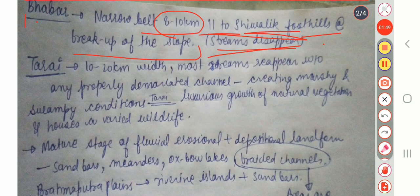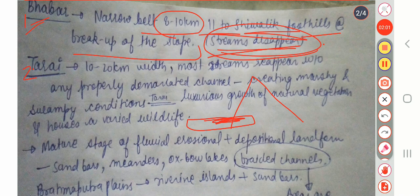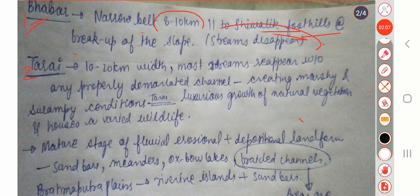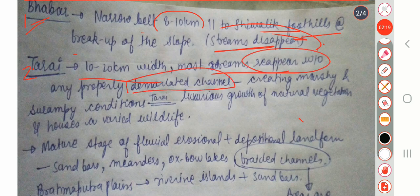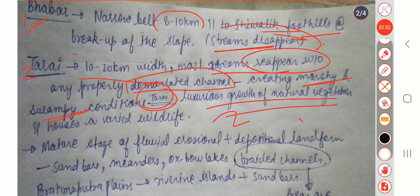Where the slope is breaking up, the Bhabar starts at that portion. The second zone is Terai, which is 10 to 20 kilometers in width. Most streams that disappear in the Bhabar stage reappear here without any proper demarcated channel, creating marshy and swampy conditions which is known as Terai. In this region there is a luxurious growth of natural vegetation and it houses varied wildlife.